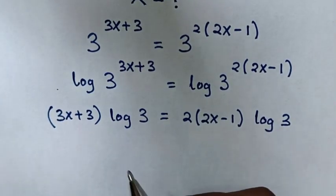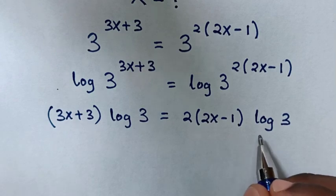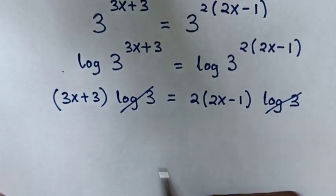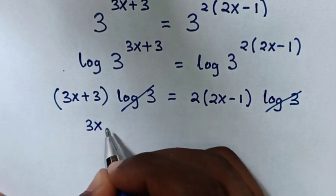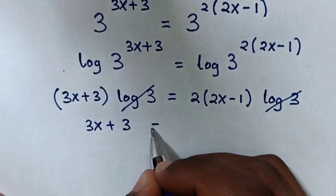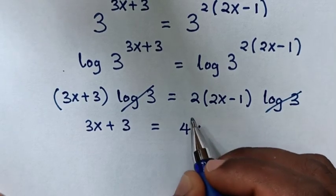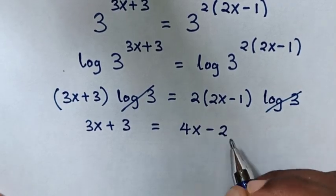Now, we have log of 3 on both sides, so they will cancel each other. Our equation will be 3x plus 3 is equal to 2 times 2x, which is 4x, then 2 times negative 1 is negative 2.